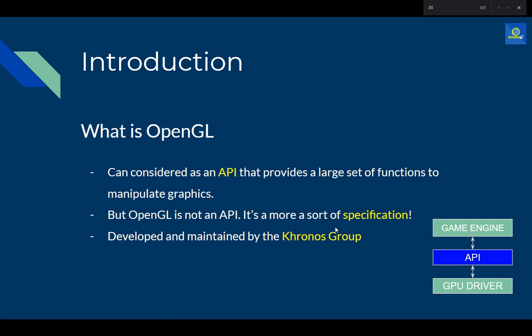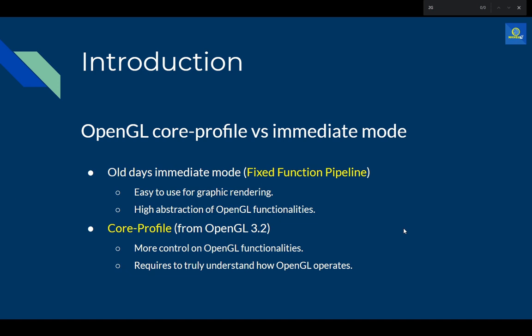OpenGL is not an API but a specification. It specifies some functions, and each graphics card manufacturer then defines what those functions do for its own hardware. So a specification means we have function definitions, and each manufacturer implements them on their own graphics card. OpenGL is developed and maintained by the Khronos Group.